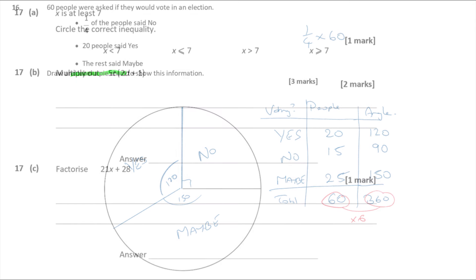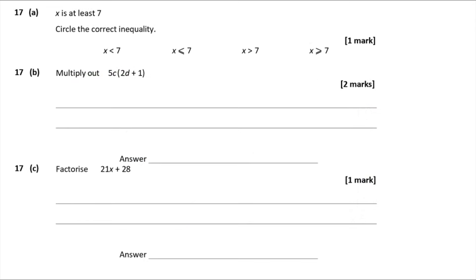Question 17a — x is at least 7. Circle the correct inequality. At least 7 means 7 or more, which is written as x ≥ 7 — that is, x is equal to 7 or bigger than 7.